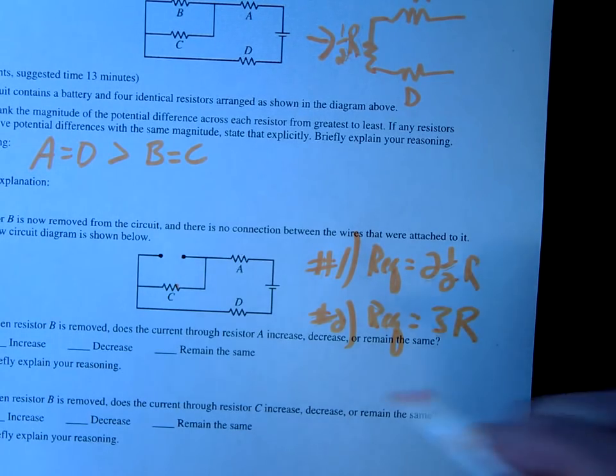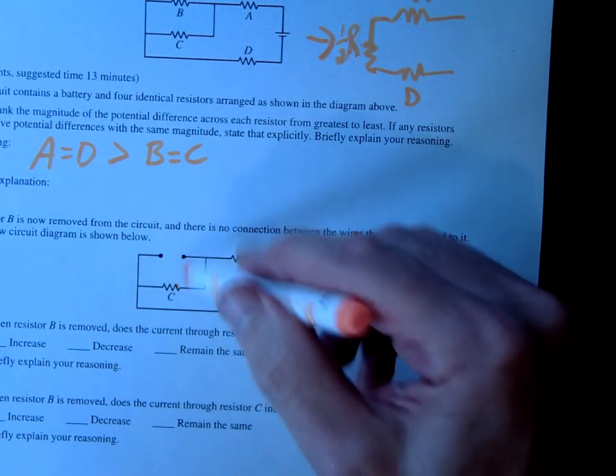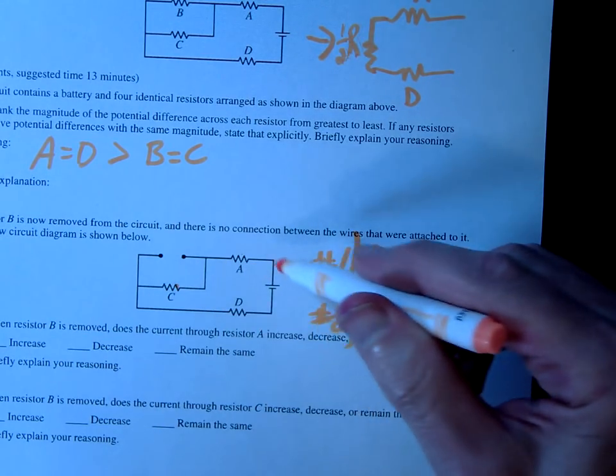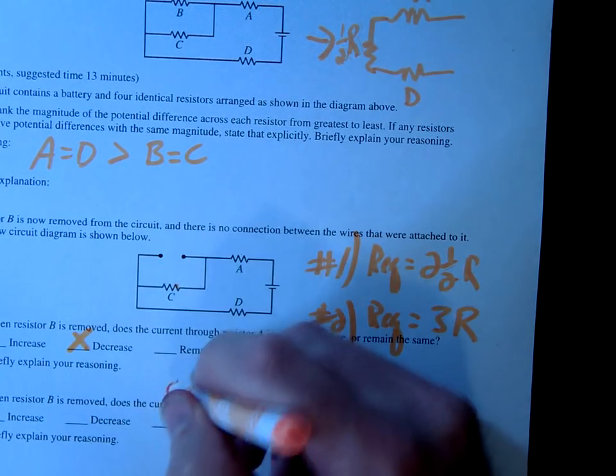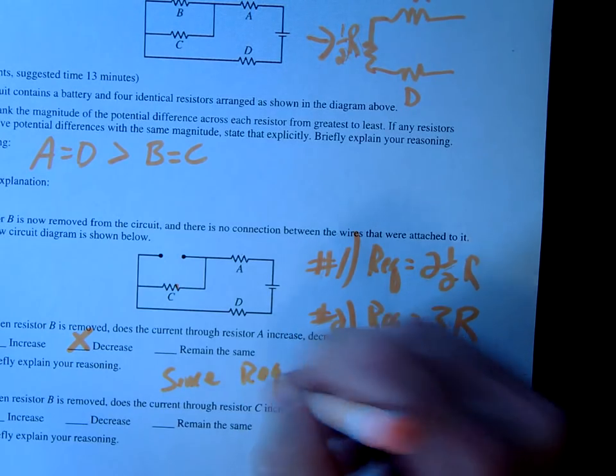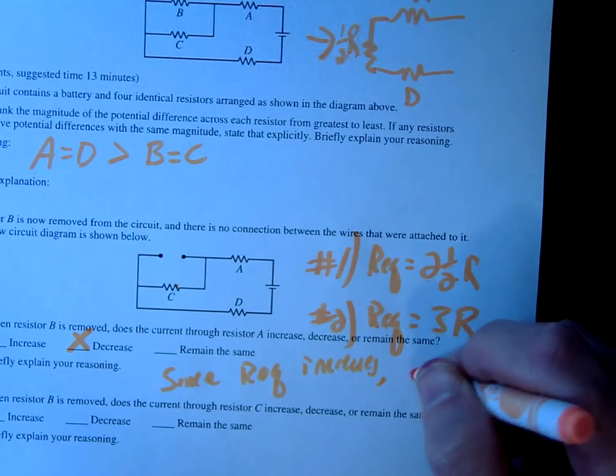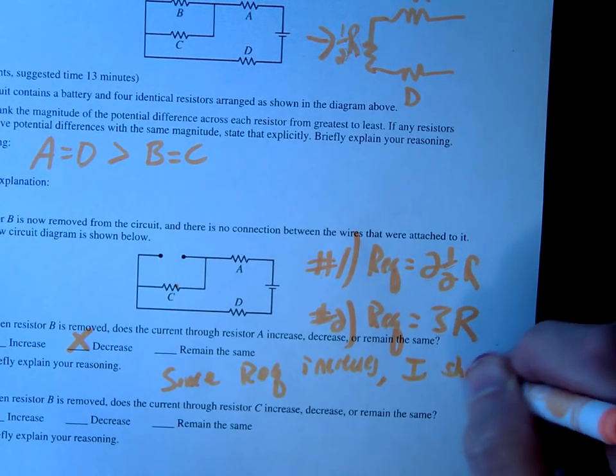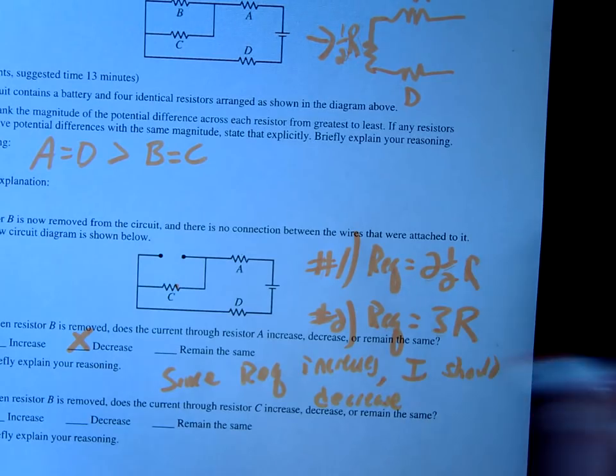So clearly you can see, since the resistance goes up, so B is removed, what happens to A? So since the resistance goes up, since R equivalent increases, the current should decrease.